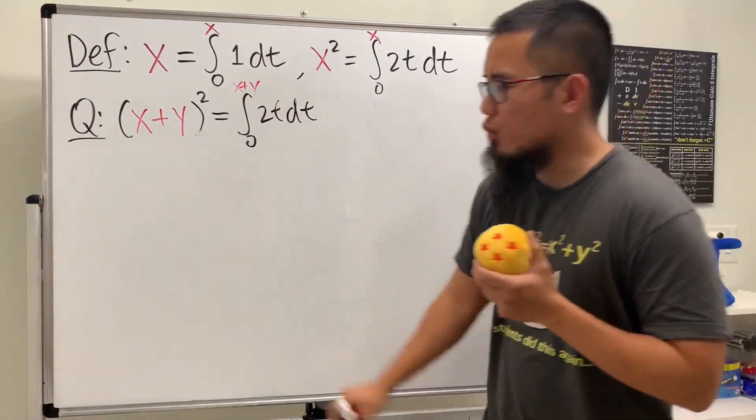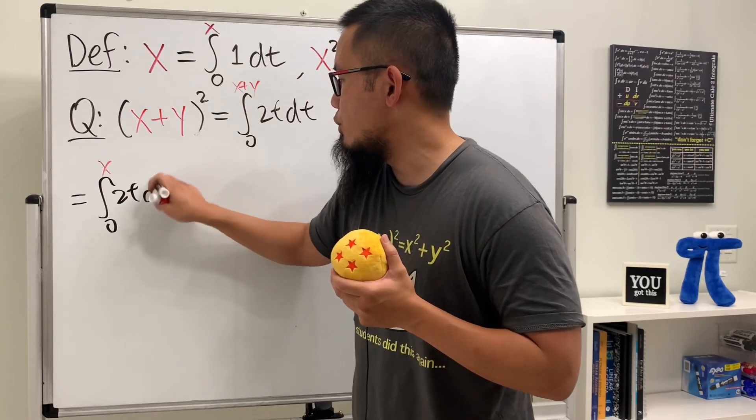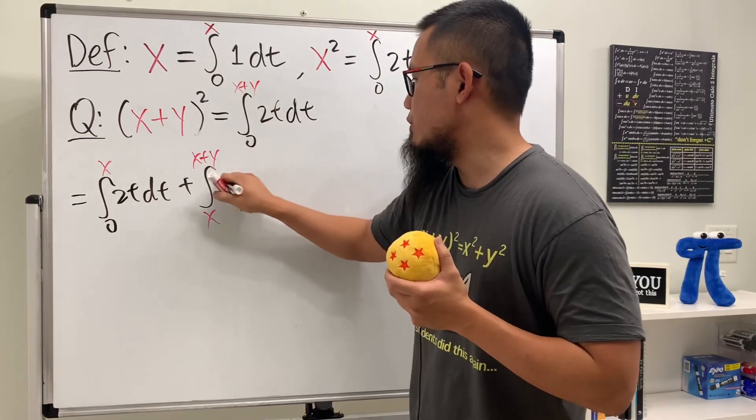And next, we'll have to break down this integral into two integrals. The first one will be going from 0 to x, and then we still have the 2t dt right here. And next, we'll have to pick that from x right here, and then finish up to x plus y, and we still have the 2t dt.